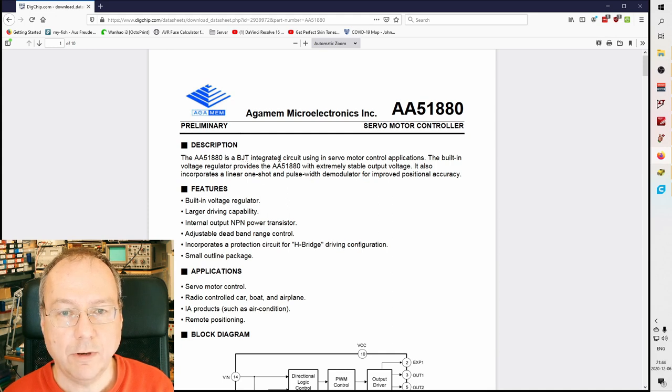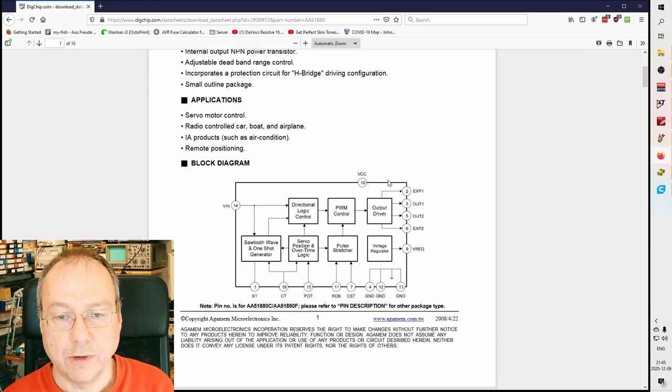Here is the datasheet. It tells us that it is a BJT integrated circuit, a bipolar junction transistor integrated circuit used in servo motor control applications. The built-in voltage regulator provides the AA51880 with extremely stable output voltage. It also incorporates a linear one-shot pulse width demodulator for improved positional accuracy. They put in a block diagram of the chip where we have a Vin, a Vcc connection, and a ground connection. This is actually what we connect to when we control the motor driver.